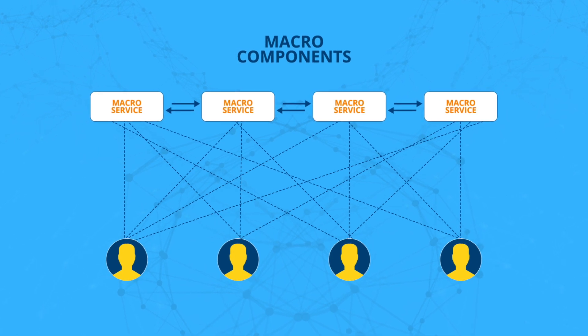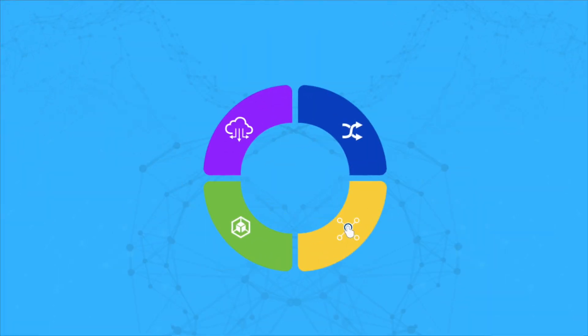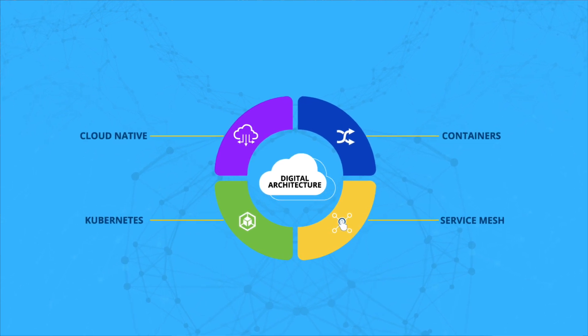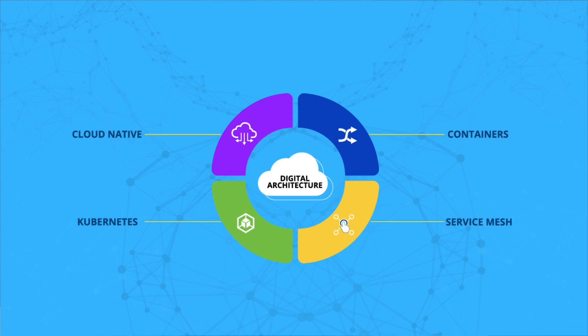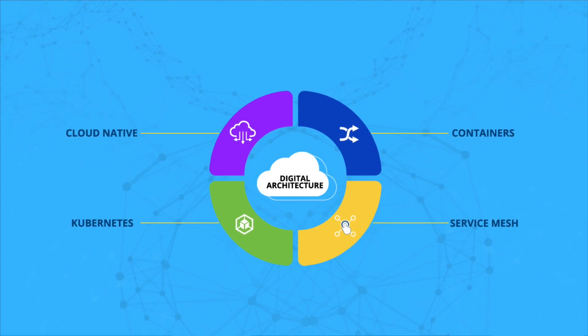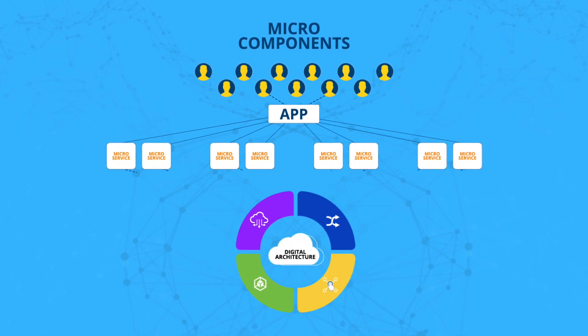Earlier, most architectures used to have macro components, and the definitions were about how they interacted and behaved with each other. Now, with the advent of cloud-native architectures — Kubernetes, containers, and service meshes — which are basically the de facto choices for building enterprise architectures, what we're trying to do is break these macro components into simpler micro components and have finer control over them. This gives us a larger handle to manage situations, especially when supporting 25 to 30 million people for a particular app or streaming application, and helps arrest failures and scale applications.